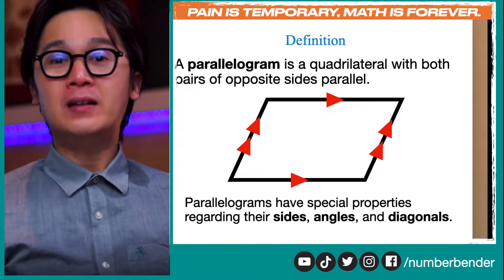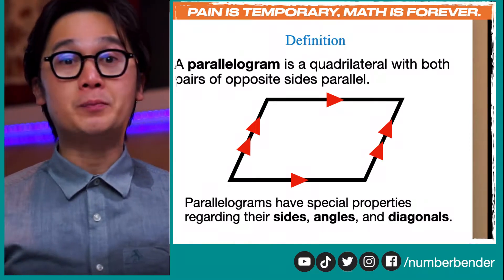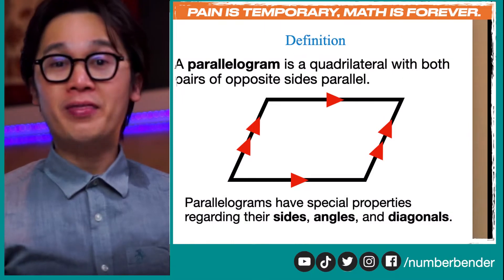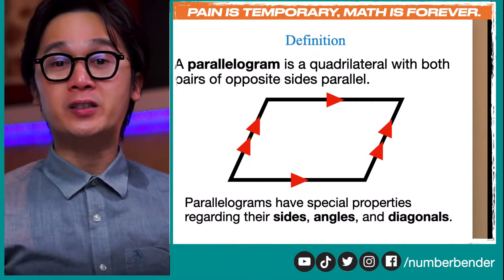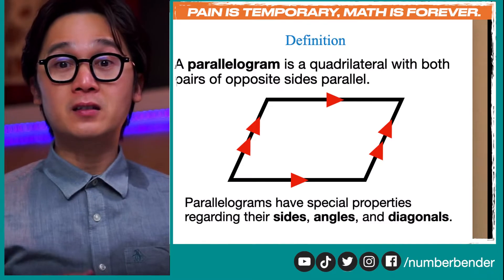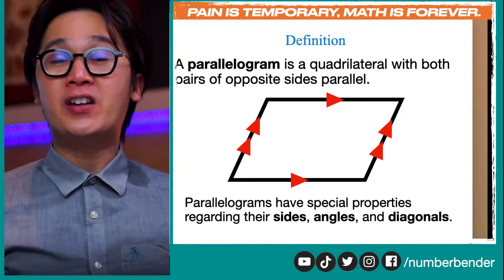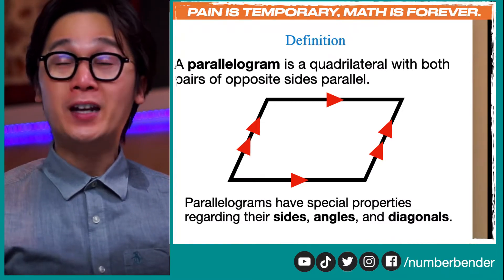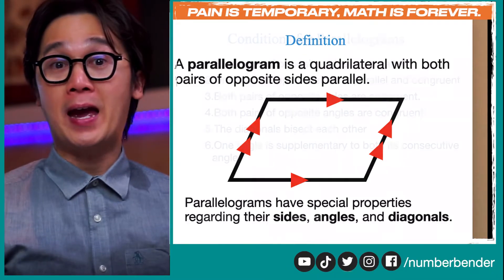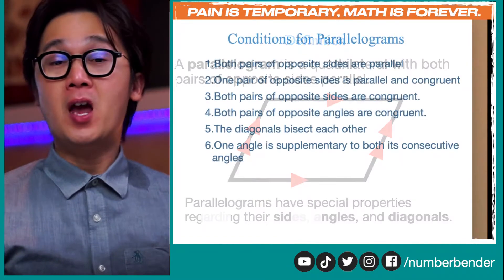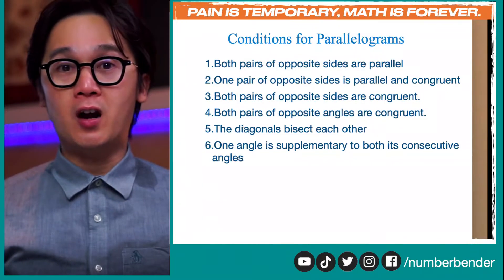Now there are parallelograms that have special properties and we're going to be working on that today. We're going to be using their sides, their angles, and their diagonals to define and consider a quadrilateral to be a parallelogram. So here are the six conditions that we're going to be working on.